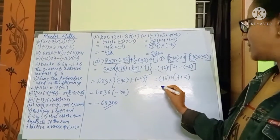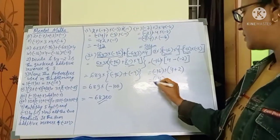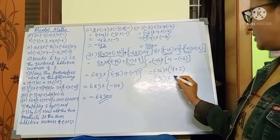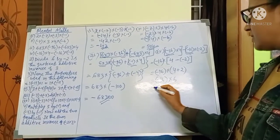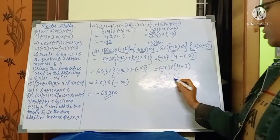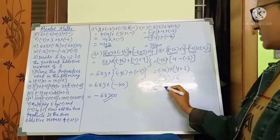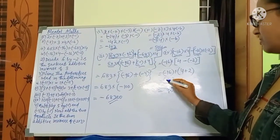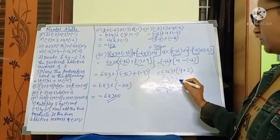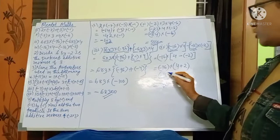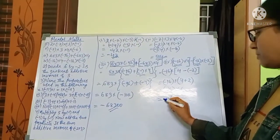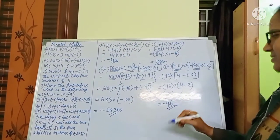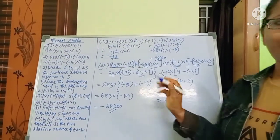So minus 16 into 4 plus 2 is 6. We multiply the magnitudes: 16 into 6 is 96. The sign: minus into plus is minus. So minus 96 is the answer.